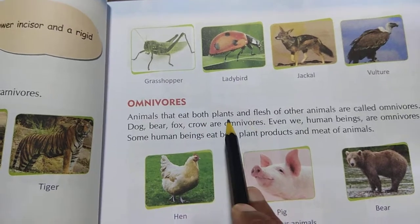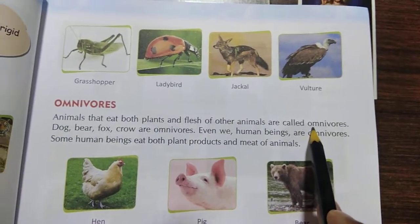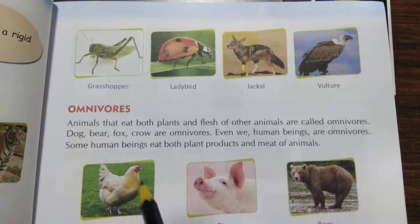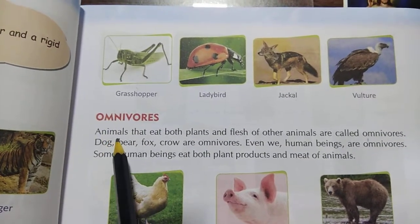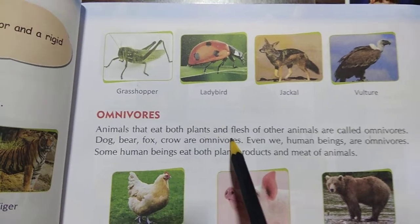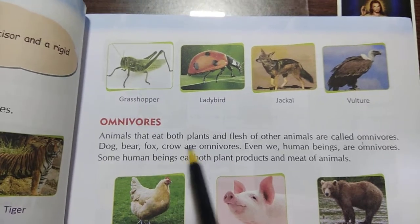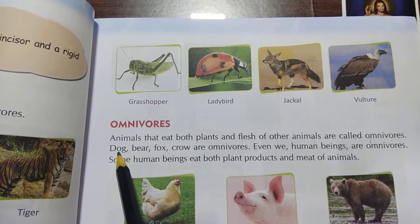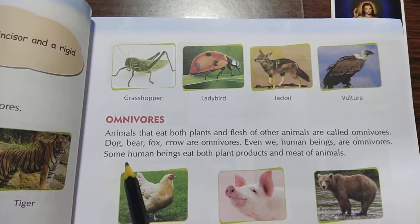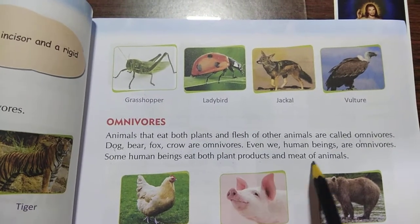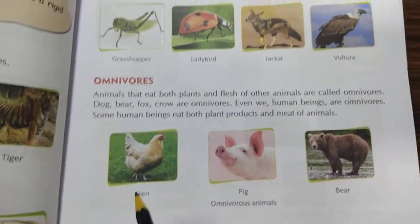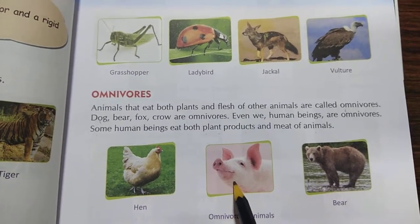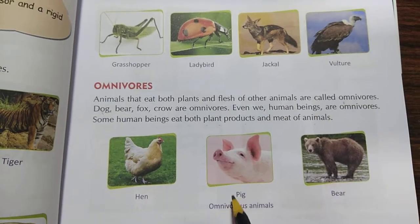Animals that eat both plants and flesh of other animals are called omnivores. Herbivores eat only plants, carnivores eat only flesh, but omnivores eat both plants as well as flesh of other animals. Examples include dog, bear, fox and crow. A dog eats fruits from plants and also eats flesh, so dogs are omnivores. Some human beings also eat both plant products and meat. Other examples shown: hen, pig and bear — they all eat both.